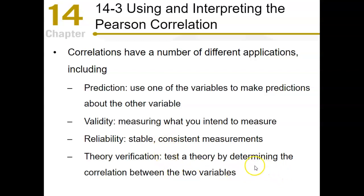Lastly, you can use correlations for theory verification. If you think there's a connection between family income and how well a student does, and you find a correlation between those two things, you can establish that family income does affect academic performance.